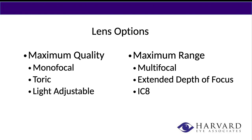When we look at the options, monofocal and multifocal. I like to split it into two categories: one being the maximum quality category, with three lenses that fall under there, and then the maximum range category. It's sort of a balancing act. If you opt for more quality, you're going to give up some range. If you opt for more range, you're giving up some quality of vision.